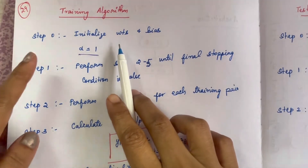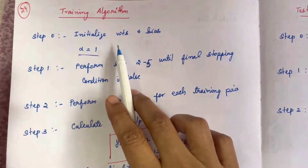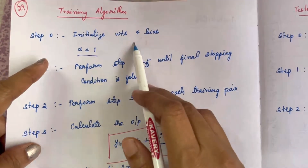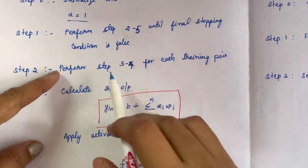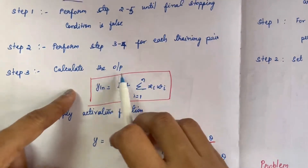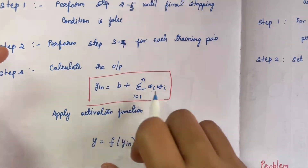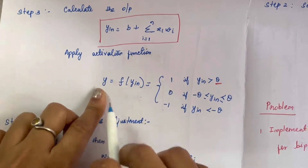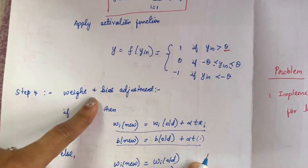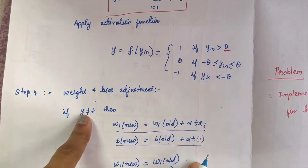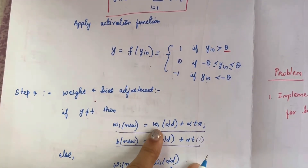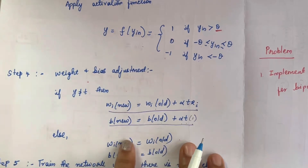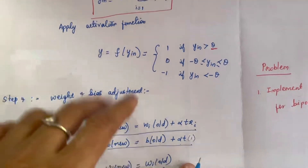Next is the training algorithm. We will write this training algorithm based on the flowchart — the same steps, written step by step. Step 0 is weight initialization. Step 1 performs steps 2 to 5. Step 2 performs steps 3 to 4. Step 3 is finding y_input using the formula. Step 4 is applying the activation function to find y. Step 5 is the weight and bias adjustment: compare y and t; if not equal, update weights using α·t·xi, otherwise keep old weights as new weights and old bias as new bias.